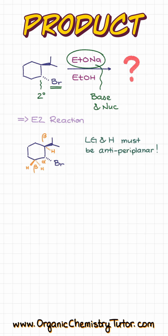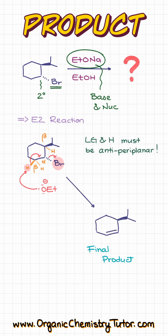We also know that for the E2 reaction, the leaving group and hydrogen must be antiperiplanar to each other. Since bromine, my leaving group, is looking away from me, that means the hydrogen I can pull off must be looking at me. The only hydrogen available is right over here, which means my ethoxide is going to come in and snatch that proton, kicking our leaving group out, giving us the following alkene as the final product, and not the one with the double bond over here.